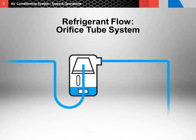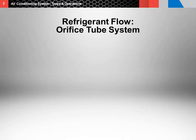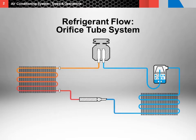The refrigerant then exits from the outlet port of the evaporator as a cool, low pressure vapor and enters the accumulator as a cool, low pressure vapor. The refrigerant exits from the outlet port of the accumulator as a cool, low pressure vapor and is then drawn back to the compressor as a cool, low pressure vapor.